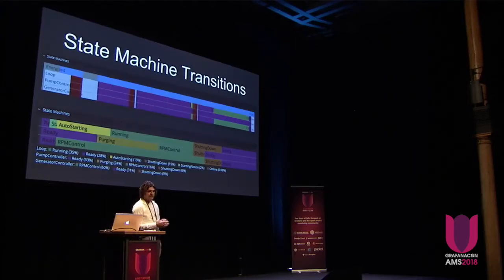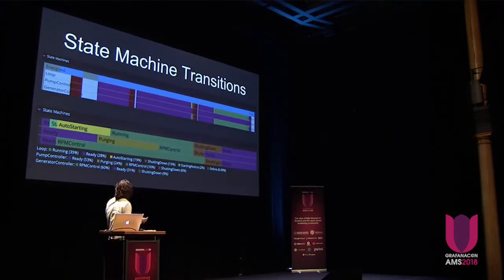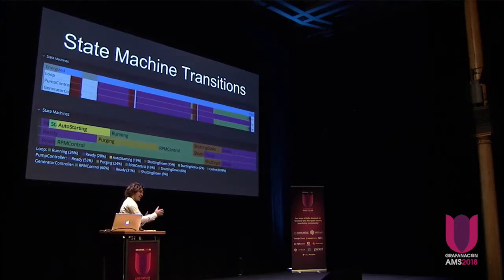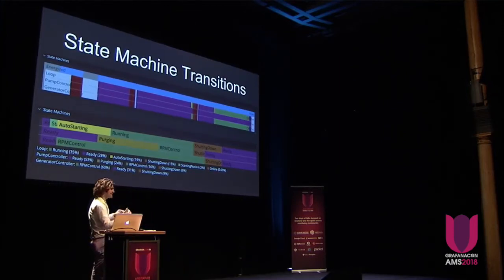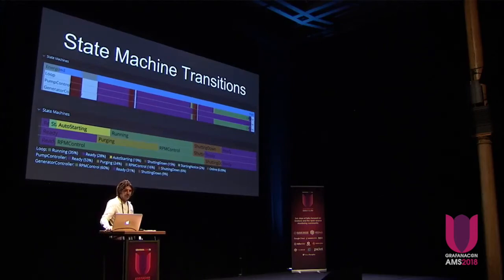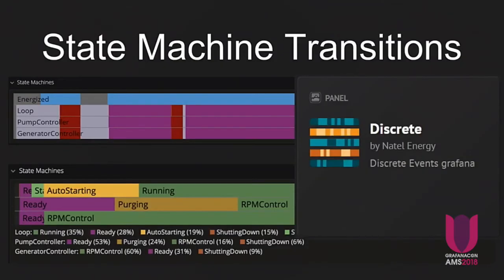The other main thing we needed to show was the state machine transition. As the machine is running through different processes, we need to know: is there electricity to the whole system, is the loop running, is the pump going, what processes do these go through and how do they relate to each other? Previously we had graphed a bunch of fields with ones and zeros and tried to make a Grafana panel, but that didn't work very well to represent states. So this is a pretty simple panel that shows discrete string values as a series of on/off graphs, and we published that.